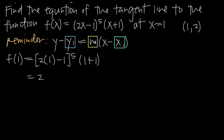The only value we need now is m, which is just the derivative of the original function evaluated at the point we found. So we take the derivative f prime of x. We're going to need to use the product rule because we have the product of two functions: the first is 2x minus 1 to the fifth, and the second is the quantity x plus 1.